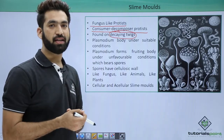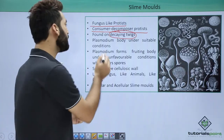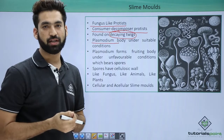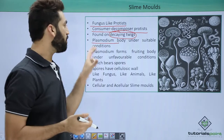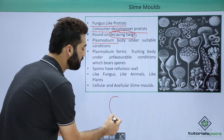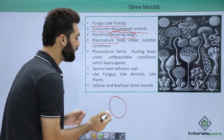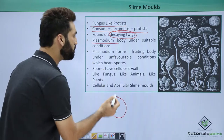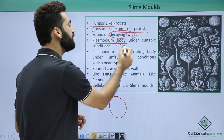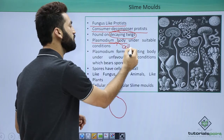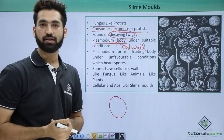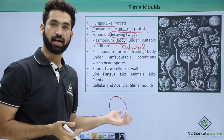In suitable conditions, slime molds behave like a plasmodium body. What is a plasmodium body? In suitable conditions, the plasmodium body is something where there is no cell wall — the cell wall is not present in the plasmodium body. This is the normal condition of the slime mold.